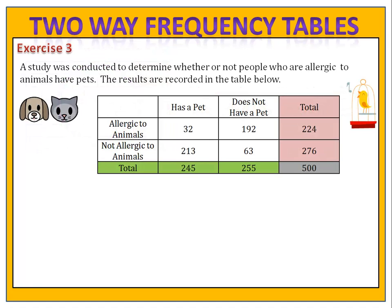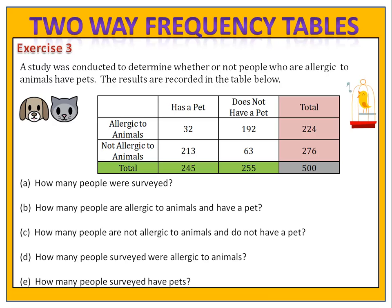In our third and final exercise, we've conducted a study to determine whether or not people who are allergic to animals have pets. The results are recorded in the two-way frequency table. We ask each respondent two questions: are you allergic to animals, and do you have a pet? There's a series of five questions for you to answer. Please pause the video and complete exercise three.